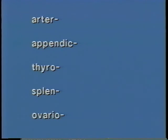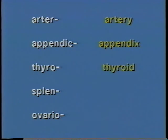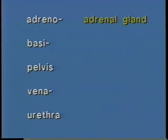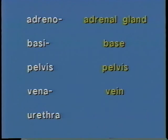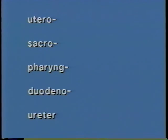Let's review the 25 elements introduced in this lesson. Say the element and its meaning out loud as we review them together. Arter — artery. Appendic — appendix. Thyro — thyroid. Splen — spleen. Ovario — ovary. Adrenal — adrenal gland. Basi — base. Pelvis — pelvis. Vena — vein. Urethra — urethra. Utero — uterus.